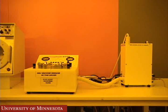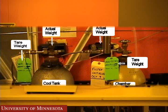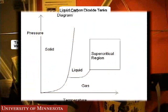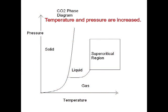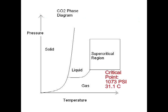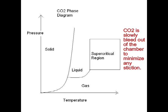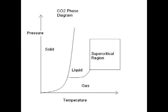The CPD consists of a chamber and a condenser to the right of the machine. Behind the CPD in the chase are two liquid CO2 tanks. The liquid CO2 is slowly increased in temperature and pressure until the supercritical region has been reached. There is no distinct difference between the liquid and vapor phase in this region. This lack of interface allows the CO2 to be slowly bled off without breaking any beams or causing stiction.